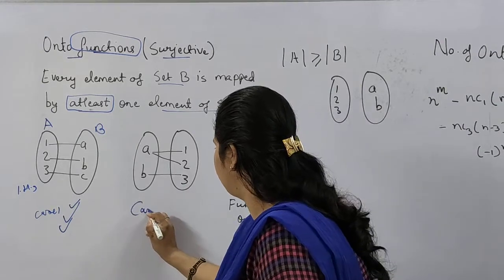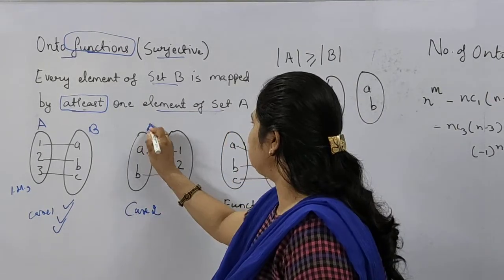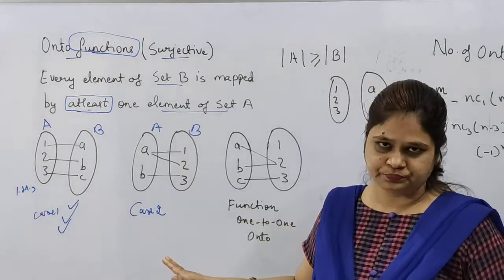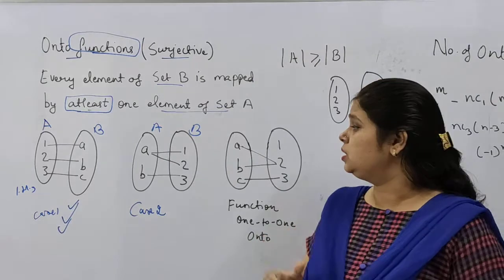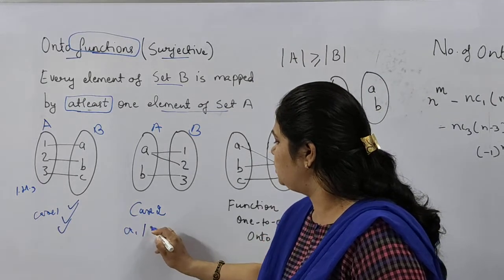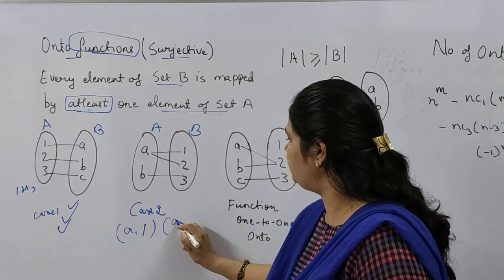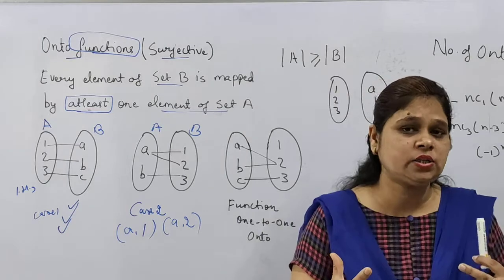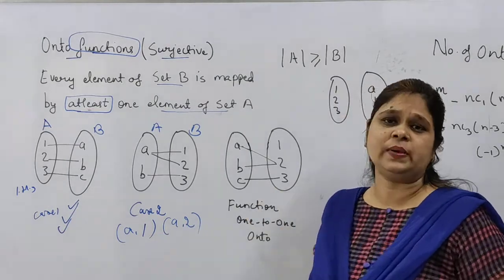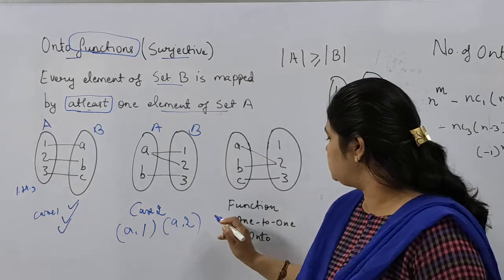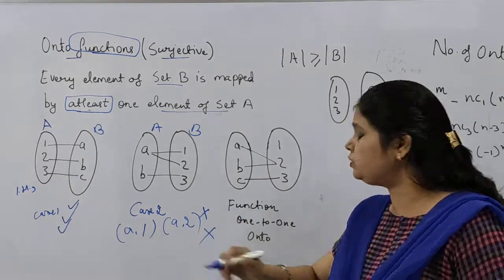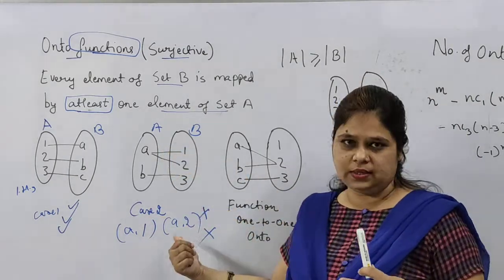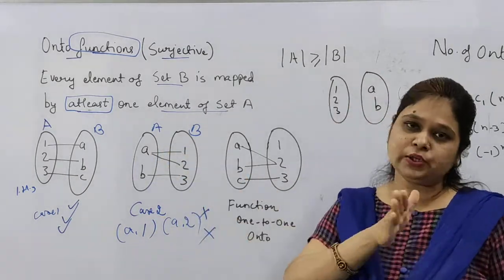This is the function. Now let us see this case 2. Again, this is set A, this is set B. Now we need to understand, is this a function? No. Why? Because let us see. A ka mapping 1 ke saath hai. A ka mapping 2 ke saath hai. We already in functions declared this thing. There is contradiction in values. A is mapped through whom? We cannot identify. Hence, this is not a function. This is not one to one function. Why? Because A does not have unique mapping with B. A is mapped with 1 and also with 2.